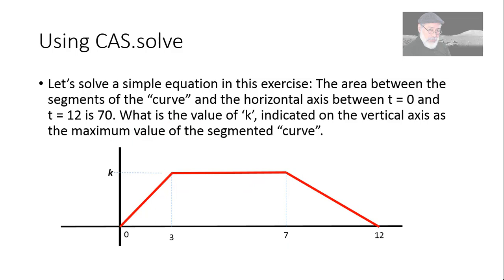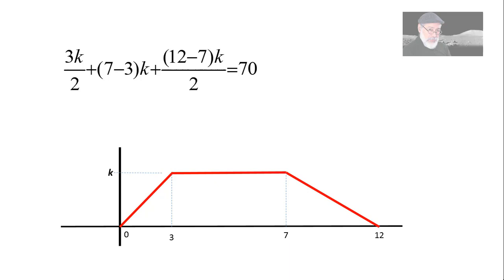But the value of k is unknown. We are to find what is the value of k indicated on the vertical axis, so that the total area under that curve is 70. The area under the first triangle is 3 times k divided by 2. The area under the rectangle in the middle is 7 minus 3 multiplied by k. And the area under the triangle on the far right is 12 minus 7 multiplied by k divided by 2, and that must equal 70.